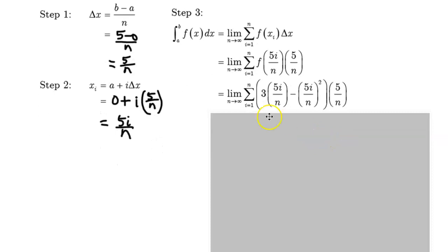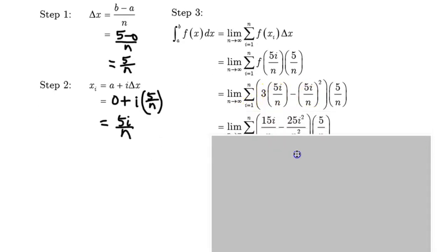So you can imagine in the next step, we'll probably be expanding. And indeed, that's what happens. So 3 times 5i is 15i, and then 5i squared is 25i squared, and then n squared is n squared. So we haven't done anything with the 5 over n yet, that's the delta x.